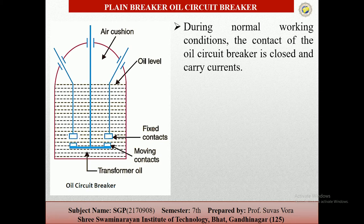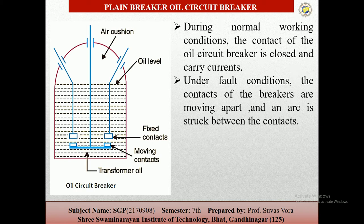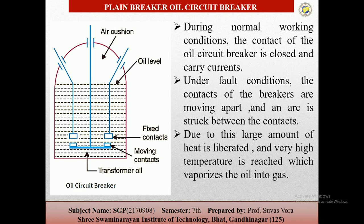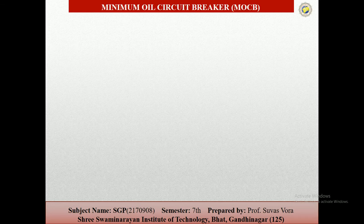During normal working conditions, the contact of the oil circuit breaker is closed and carries current. Under fault conditions, the contacts of the circuit breakers move apart and the arc is struck between the contacts. During this, a large amount of heat is liberated and the very high temperature vaporizes the oil into gas. After this, the gas absorbs the electrons and the arc is quenched.